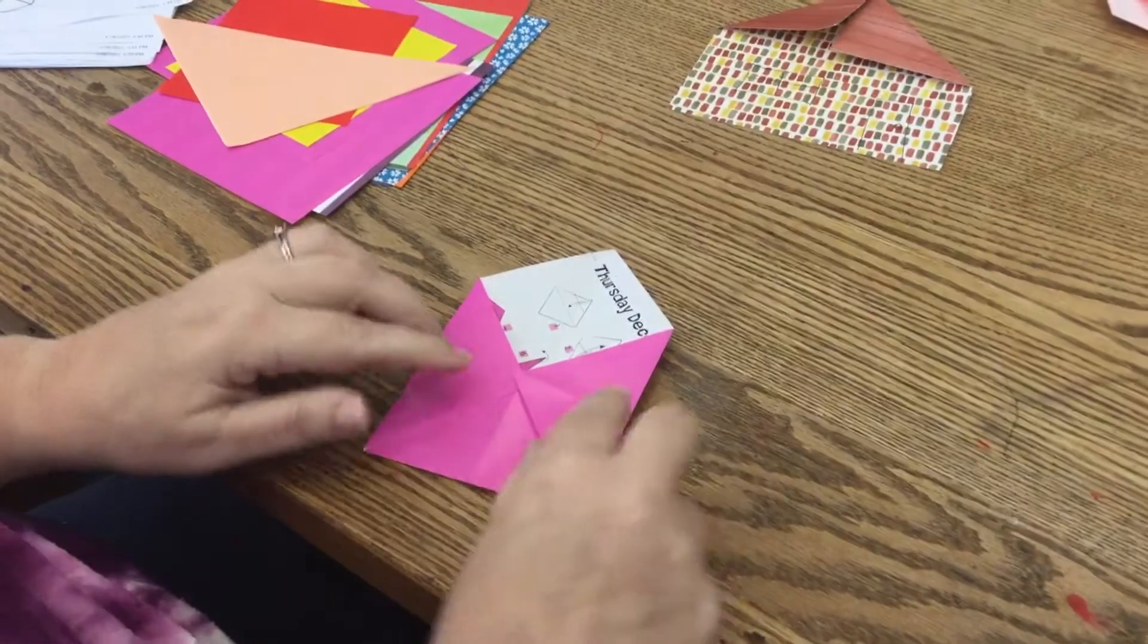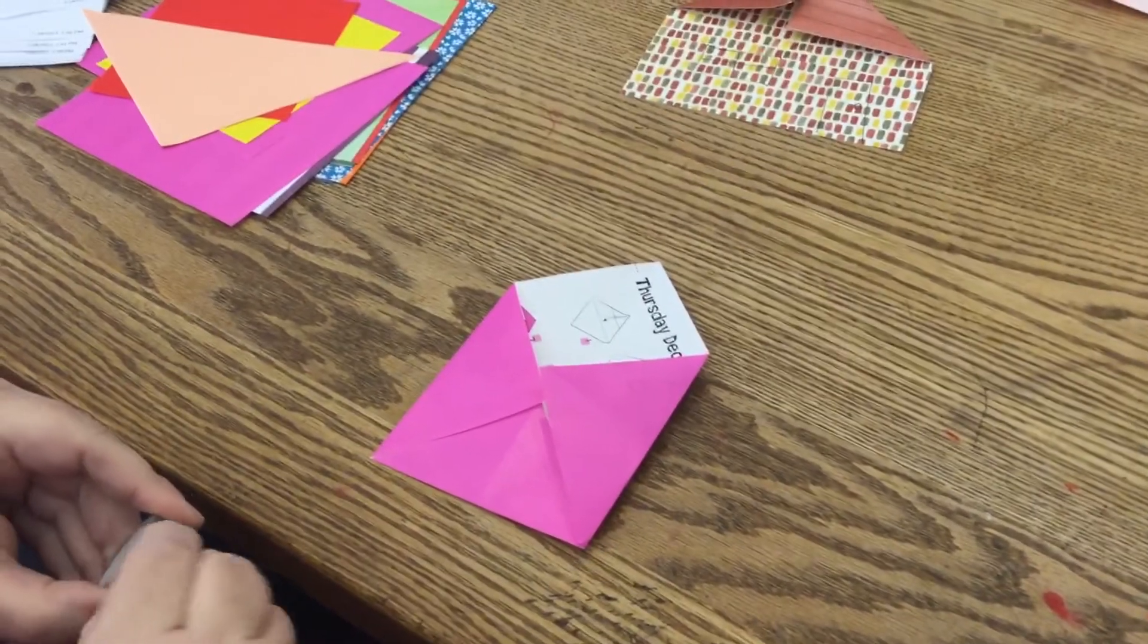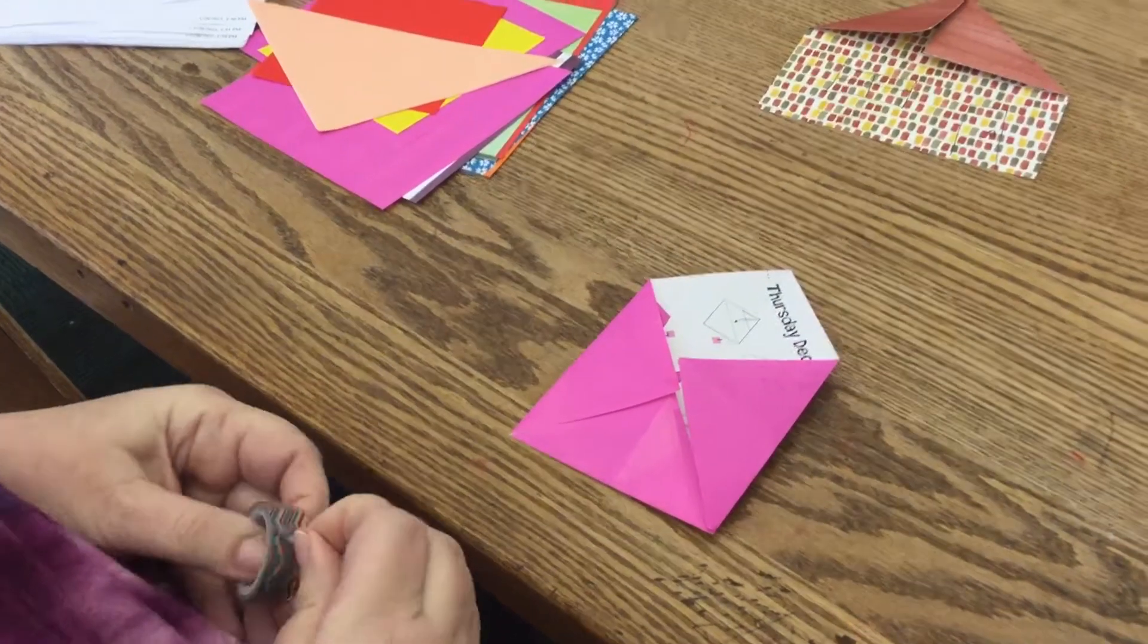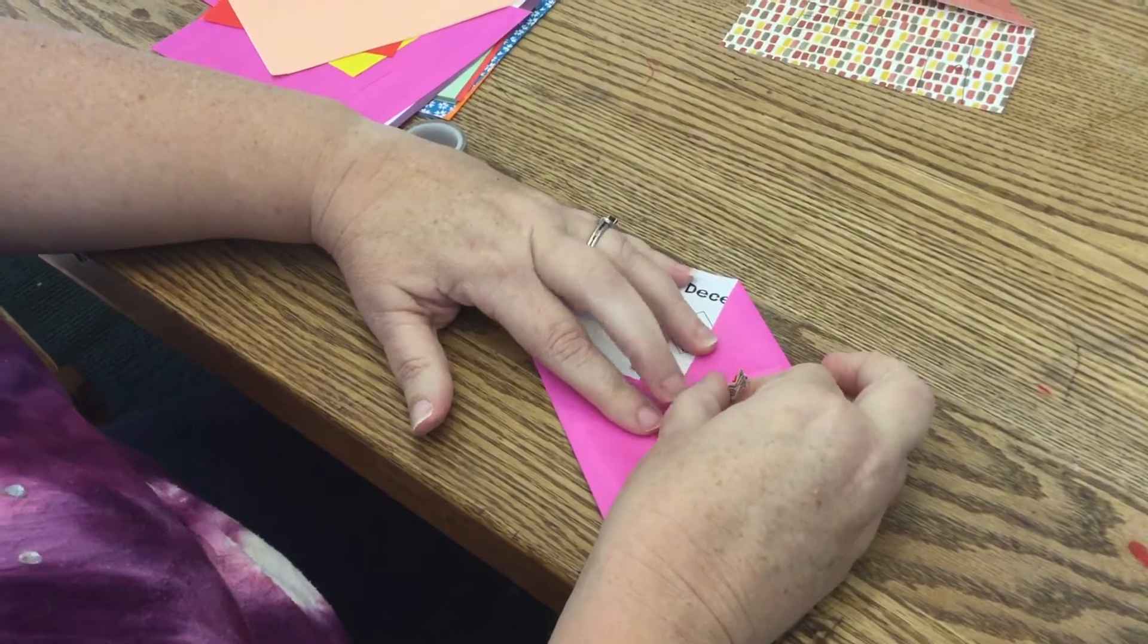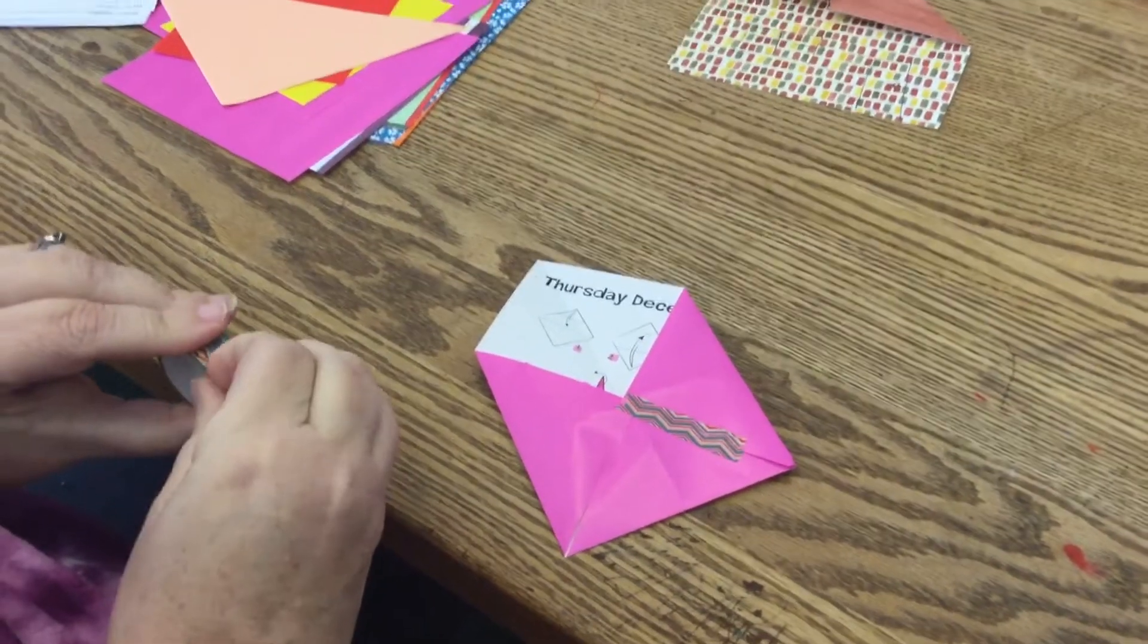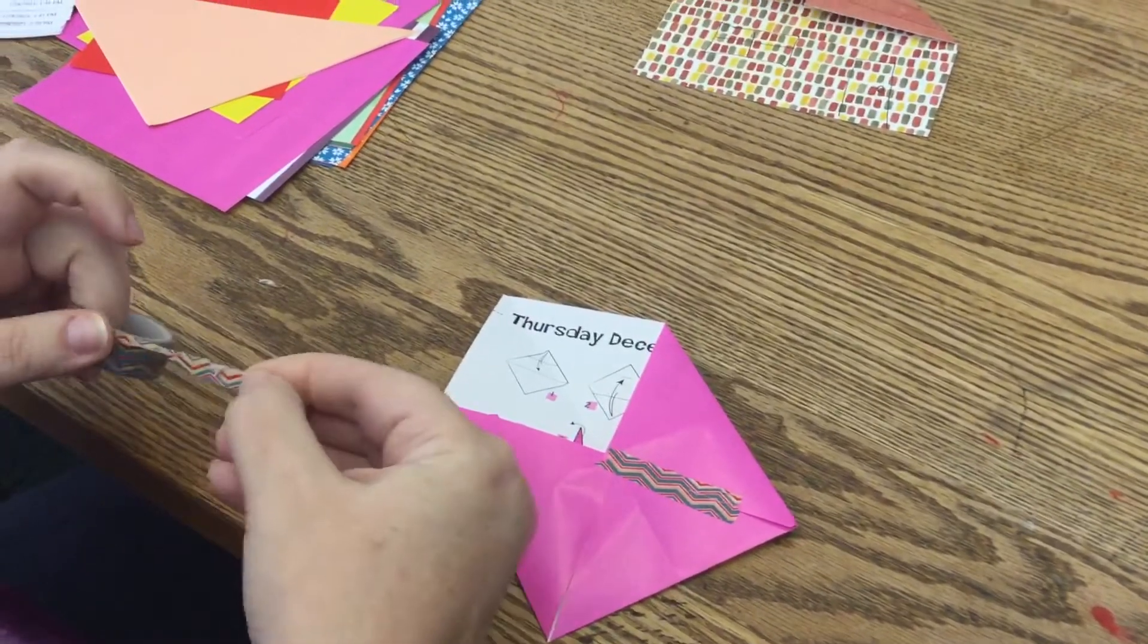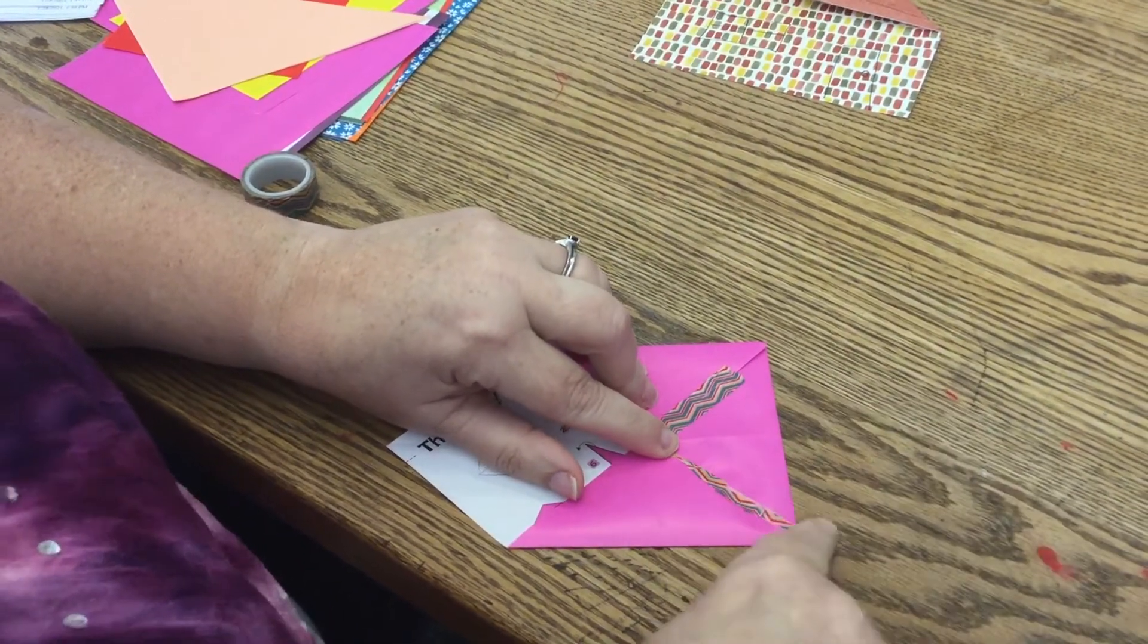So you can actually glue or tape this however you want to adhere it together. I am going to use washi tape. Sometimes it's really easy for me, sometimes it's super hard. I tore it, okay. So here's the envelope. I picked this wavy chevron washi tape, and I'm going to use that. You guys could use whatever you want for adhesive.